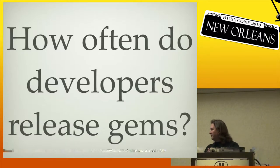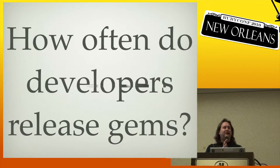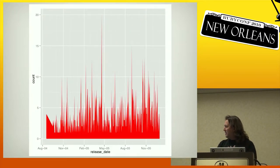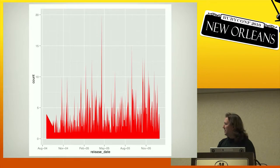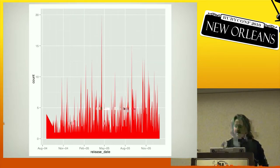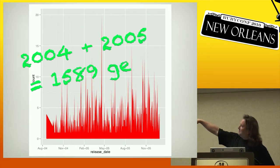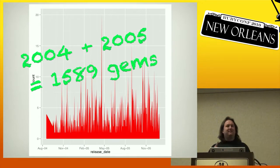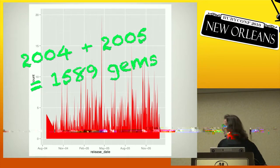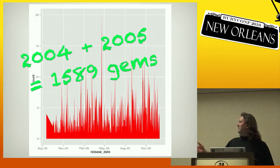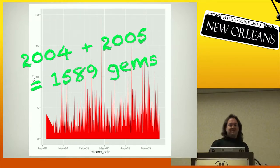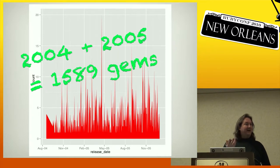This is a graph of every gem released by day from 2004 through the end of 2005. On the bottom we've got months; on the side we've got gems released per day. Between 2004 and 2005 there were 1,589 gems released, and we peaked at about 20 gems released in one day — looks like late February or March of 2005.